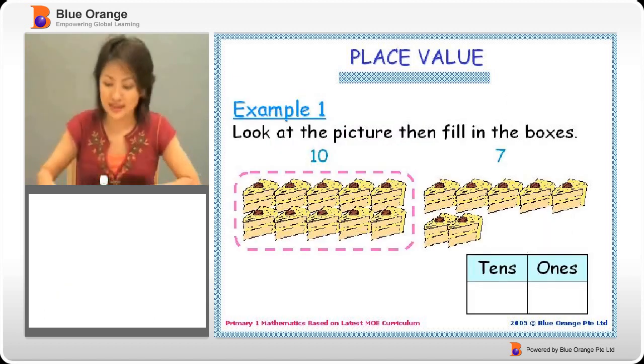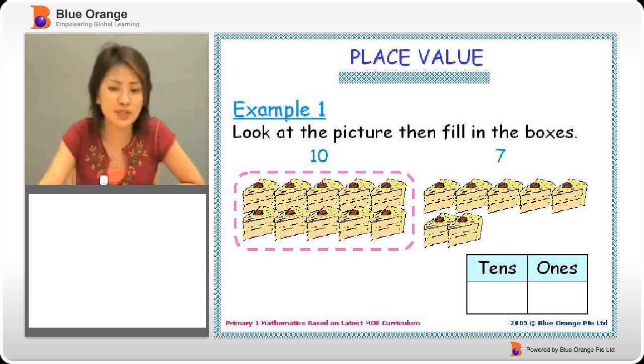Let's look at an example. Look at the picture then fill in the boxes. Now we have some slices of cakes. There are altogether 10 on the left side and then 7 on the right side. We can say that there are 17 slices of cakes or 1 ten and 7 ones.